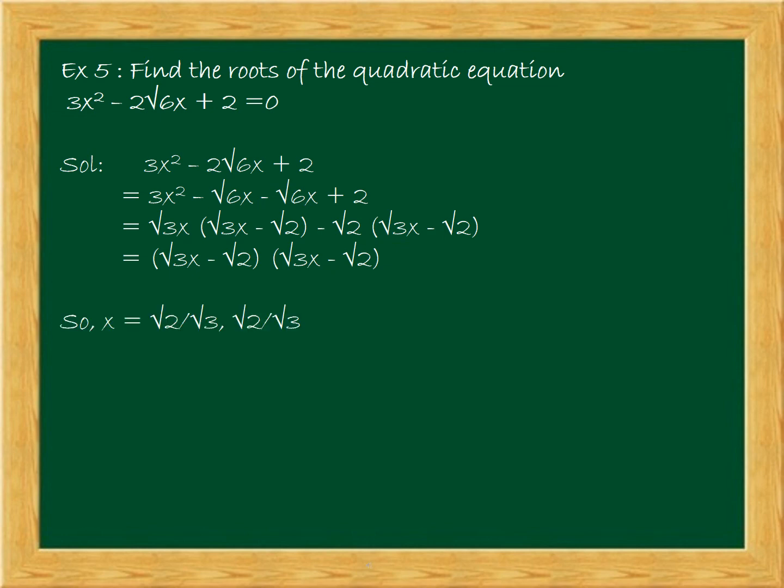So here both brackets are the same. So when you equate each bracket to zero, the value of x will be √2/√3.